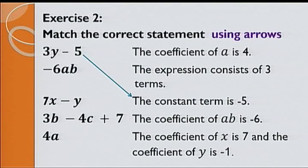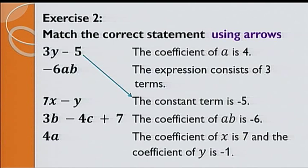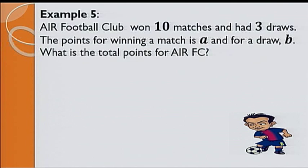Now, let's have a look at example 5. Air Football Club won 10 matches and had 3 draws. The points for winning a match is a and for a draw is b. What is the total points for Air FC? Points for 10 wins is equal to 10 multiplied by points for 1 win, which is equal to 10 multiplied by a. Therefore, 10a.